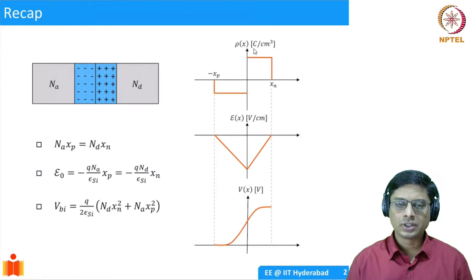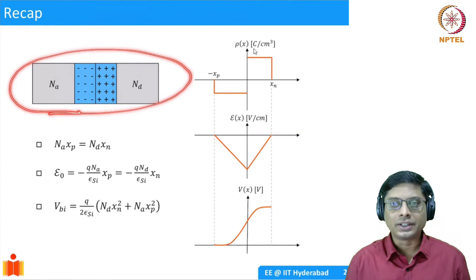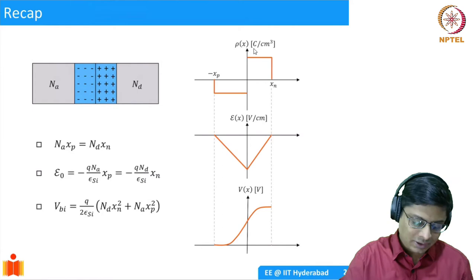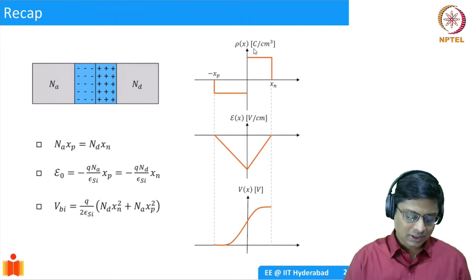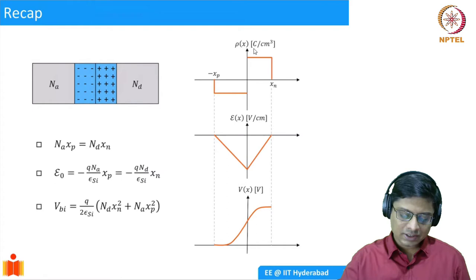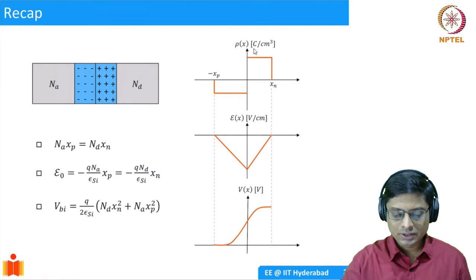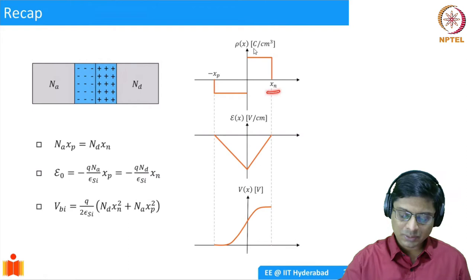Quick recap: when you have a p-type and n-type semiconductor in contact, because of the concentration gradients of holes and electrons respectively, there will be diffusion of holes and electrons, which will leave behind a positively charged space charge region in the n-type semiconductor and a negatively charged space charge region in the p-type semiconductor. We drew charge profiles — charge as a function of x — with a positive uniform charge, and labeled the edges of the depletion region as xn and xp.